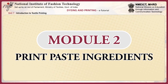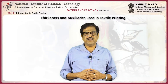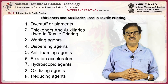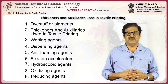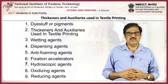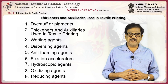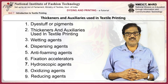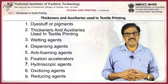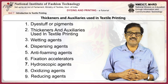This module examines the ingredients of print paste. We will look at dyes, dye stops, or pigments, as well as thickeners and auxiliaries used in textile printing, including wetting agents, dispersing agents, anti-foaming agents, fixation accelerators, hygroscopic agents, oxidizing agents, and reducing agents.